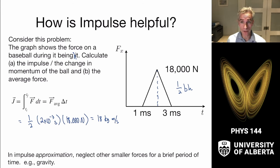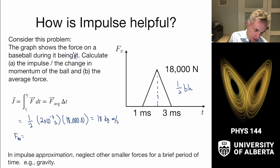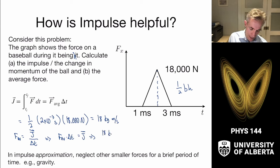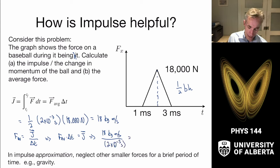The average force is the impulse divided by the time interval, because F_average times delta t equals the impulse. Taking our 18 kg·m/s and dividing by 2×10⁻³ seconds gives an average force of 9,000 newtons. That's a lot of force.